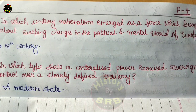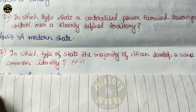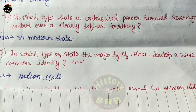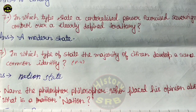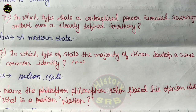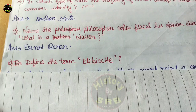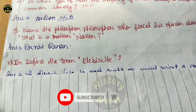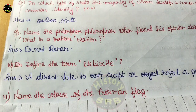Question number eight: in which type of state do the majority of citizens develop a sense of common identity? The correct answer is a nation state. Question number nine: name the philosopher who placed his opinion about what is a nation? The correct answer is Ernst Renan. Question number ten: define the term plebiscite. The correct answer is a direct vote to accept or reject a proposal.